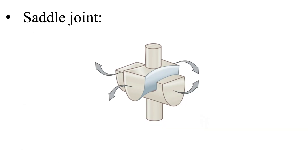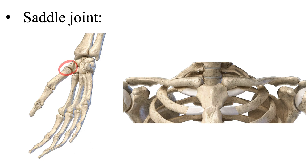Finally, we have a saddle joint. This joint is formed when the convex surface of one bone fits within the concave surface of another, allowing for a wider range of movement such as flexion, extension, abduction, adduction, and circumduction. For example, the trapezial metacarpal joint — where the metacarpal's convex base of the thumb meets the concave trapezium carpal of the wrist — as well as the sternoclavicular joint, where the convex surface of the clavicle meets the concave surface of the sternum.